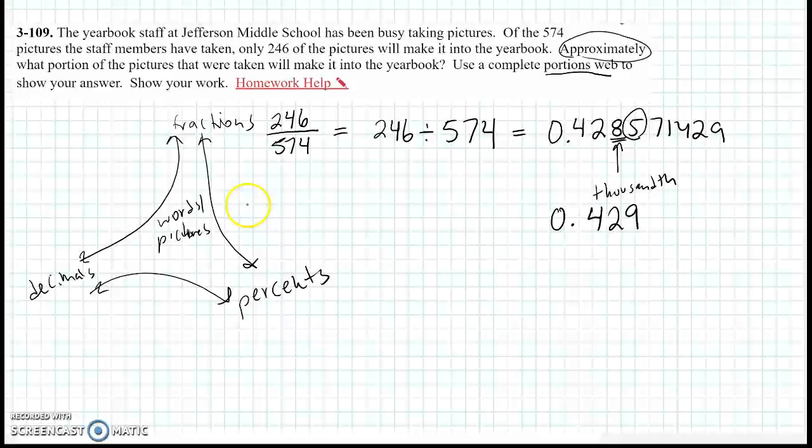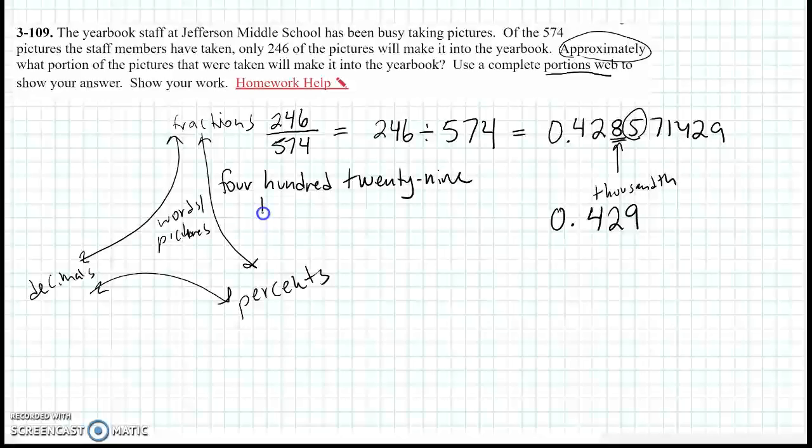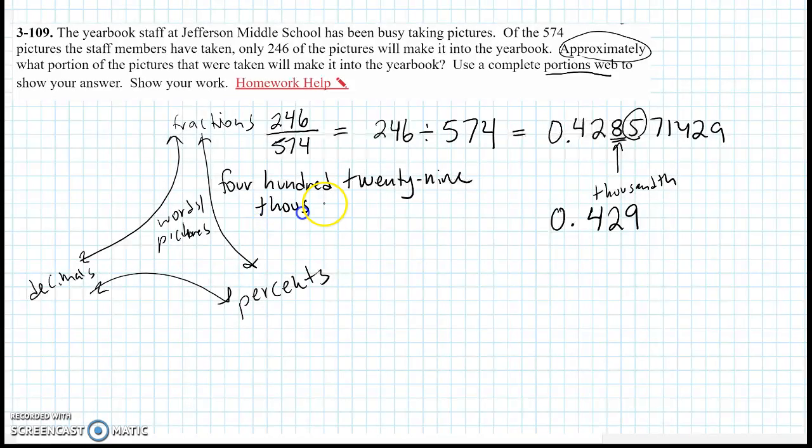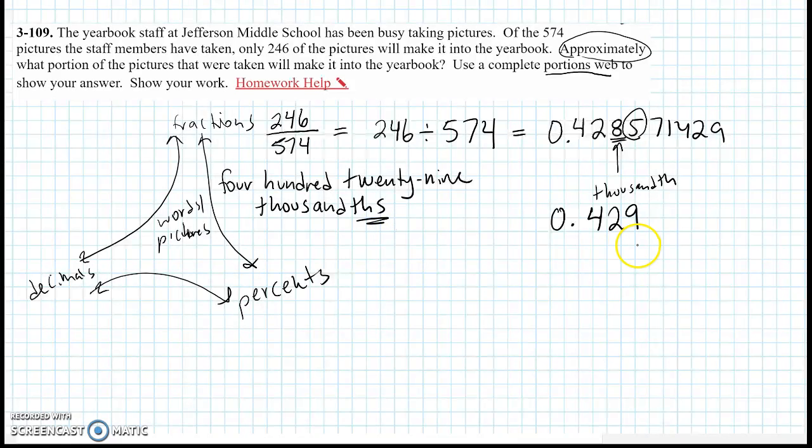Or in words, that is 429 thousandths. Make sure you've got the THS to represent decimals here. So that's what it is as a decimal. So I can fill in that for my decimal. It's about 429 thousandths.